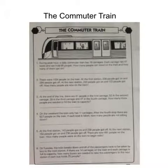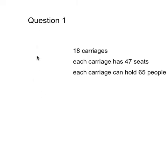So question 1, let's read this together. During peak hour a daily commuter train has 18 carriages. Each carriage has 47 seats and can hold 65 people. How many people can travel on the train and how many of them can sit?